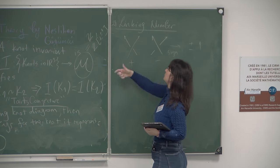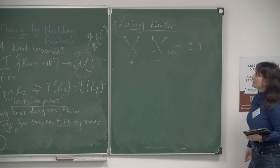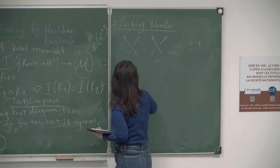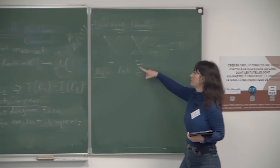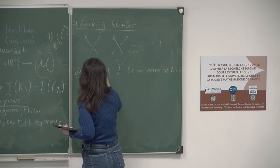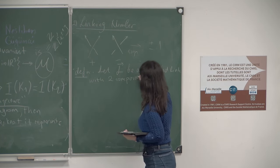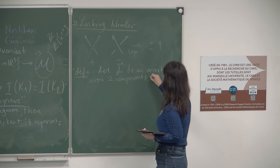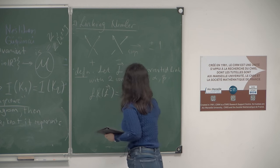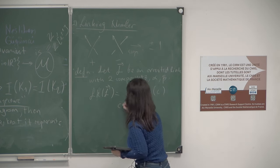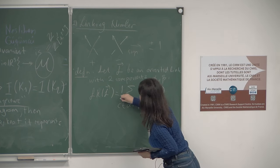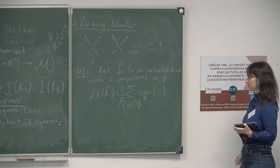The linking number is defined as the sum of signs of crossings shared between two components of a link. Let L be an oriented link with two components α and β. Then the linking number of L is half the sum of the signs of crossings shared between α and β. For the oriented Hopf link, both crossings have sign +1, giving linking number (1+1)/2 = 1.